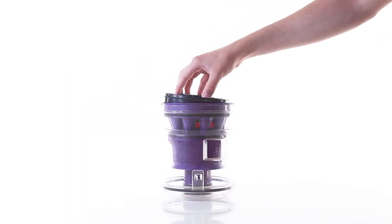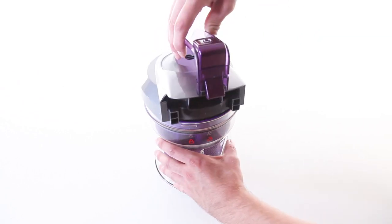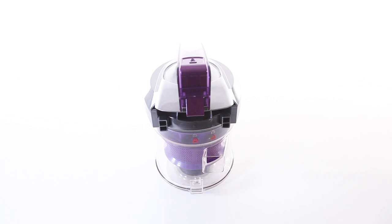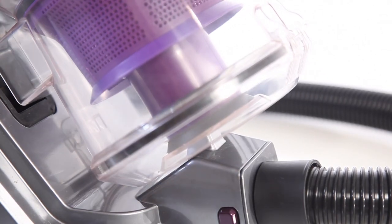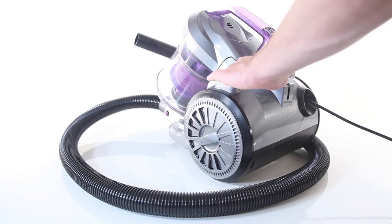Apply the filter back on the cyclonic body. Align the arrow on the lid with the unlocked padlock and twist to the locked position. Reattach the dustbin to the vacuum body and your vacuum should now work without noise or fault.